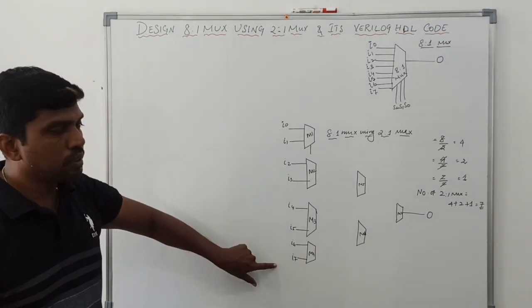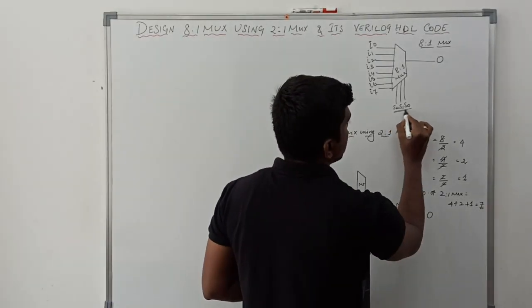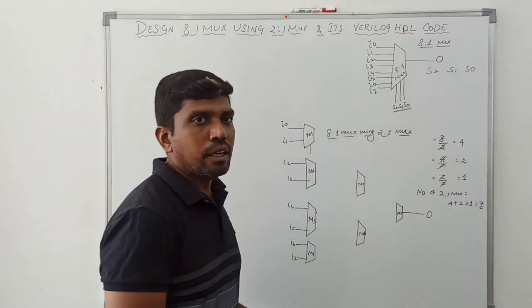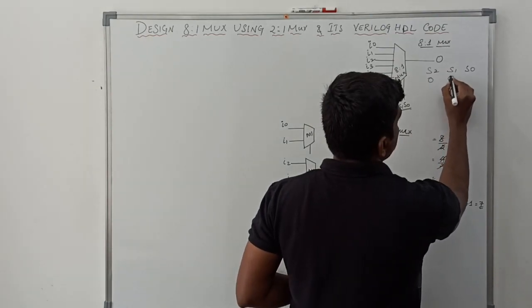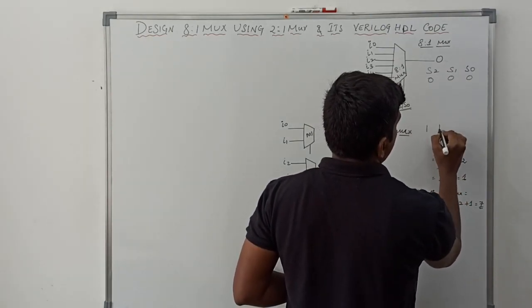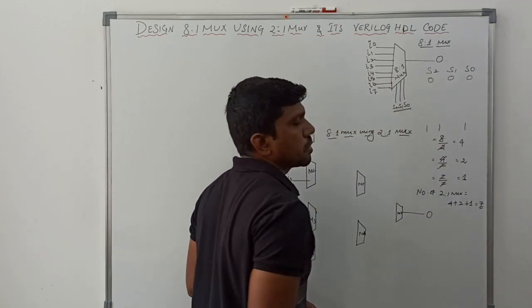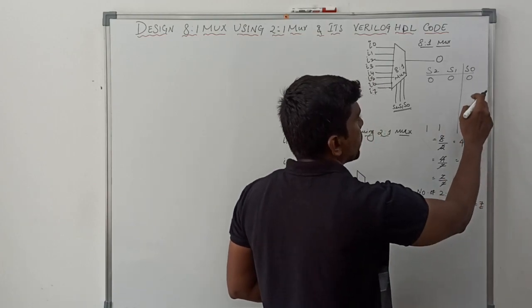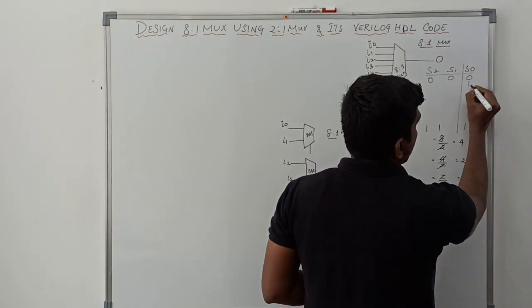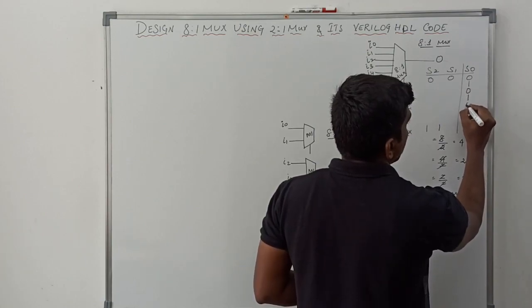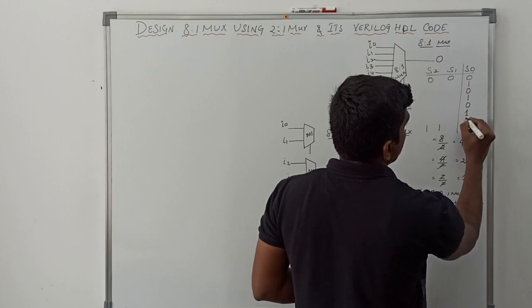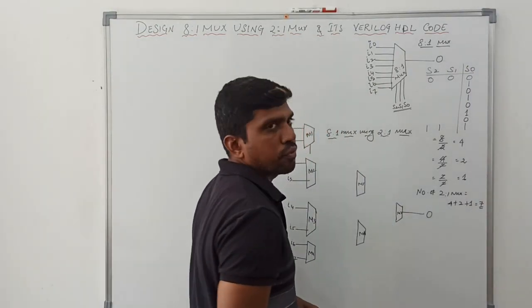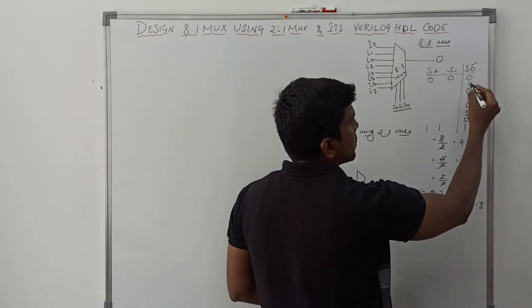It needs 3 selection lines: S2, S1, S0. These 3 variables make 8 combinations of input, starting from 000 to 111. Among these 3 selection lines, S0 is the most frequently changing input — toggling 0 to 1, 1 to 0, repeatedly, giving a total of 8 combinations. So S0 is the most frequently changing input.